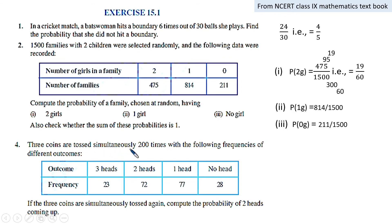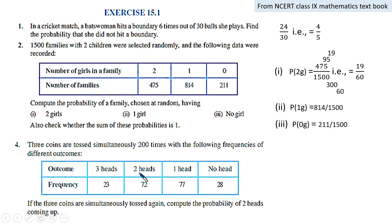Next example: three coins are tossed simultaneously 200 times with the following frequencies — three heads 23 times, two heads and one tail 72 times, one head and two tails 77 times, no head at all 28 times. Compute the probability of getting two heads. You got two heads 72 times out of 200, so the probability is 72 by 200, which simplifies to 9 by 25. The sum of all frequencies — 23 plus 72 plus 77 plus 28 — equals 200, the total number of tosses.